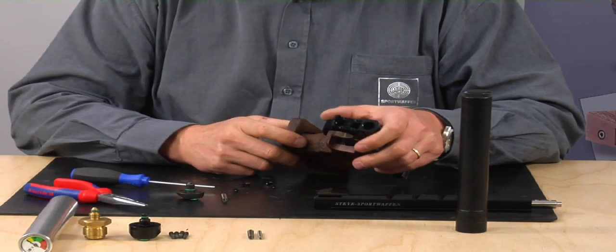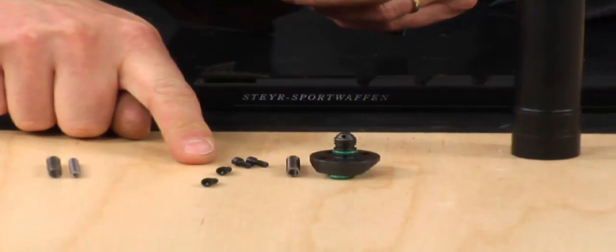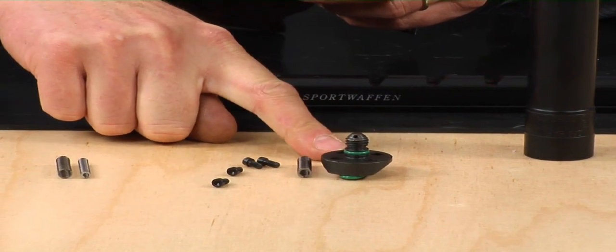Here is an overview of the CO2 parts. Four short screws, a strong spring, and the adapter for the CO2 cylinder.